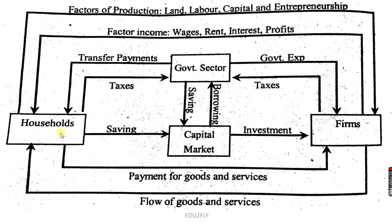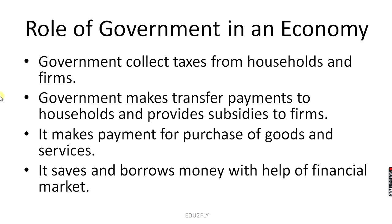The government sector is also interacting with the capital market through savings and borrowings. Households and firms are also interacting with the capital market in the same way. To summarize the role of government: the government collects taxes from households and firms, makes transfer payments to households, provides subsidies to firms, makes payments for the purchase of goods and services, and saves and borrows money with the help of the financial market.